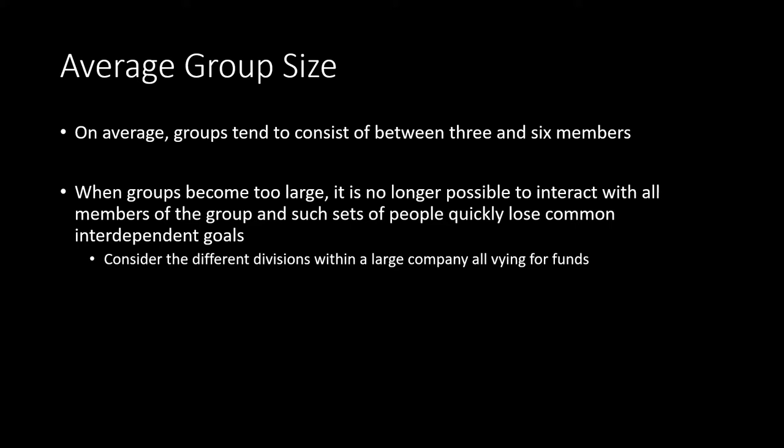On average, group sizes tend to be between three and six members. Groups of two are often referred to as dyads, and it is possible to have groups larger than six, but three to six is the typical range. When groups become too large, it is no longer possible for all members to interact with one another, and they tend to lose their common interdependent goals, resulting in either dissolution or the creation of smaller subgroups.